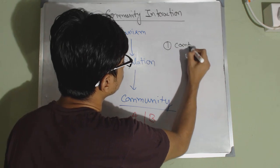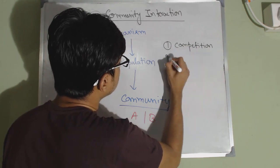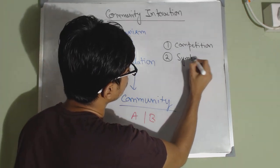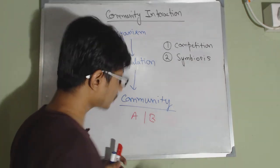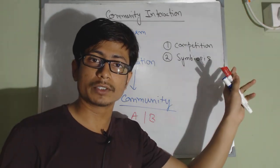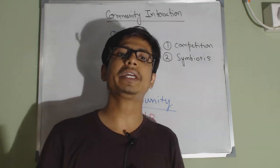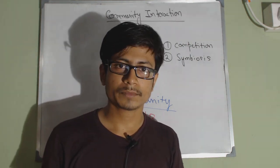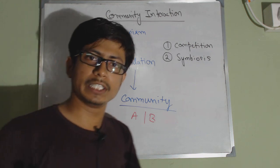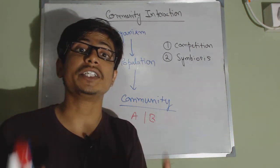One is competition, and the second is symbiosis. These are the two types of community interactions that we can see in an environment. First is competition.